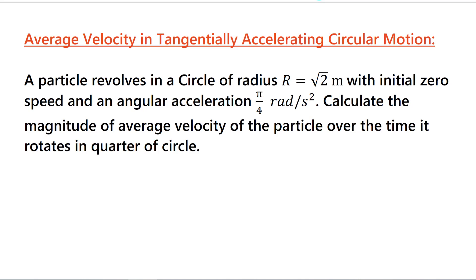The problem says: average velocity in tangentially accelerating circular motion. A particle revolves in a circle of radius r equals root 2 meter, with initial zero speed and an angular acceleration of pi by 4 radian per second square.